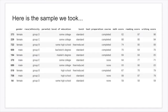Here is the sample that we took — this is what the sample looks like. We have students that are actually labeled by number; they are not identified by names. We're going to be calling them student 373, student 229, or student 722.